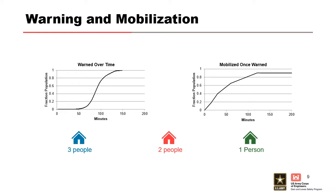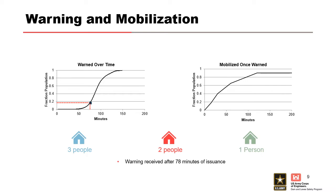How does it work in LifeSIM? Take a structure with two people in it — each structure inventory has a population associated with it. Step one: because the warned-over-time function represents the whole community, we can sample for this structure. By randomly sampling off the fraction of population that receives warning over time, and doing this for all structures, we rebuild the function so that our community is being warned at the rate we defined. In this iteration, this structure with two people will receive a warning 78 minutes after warning issuance.